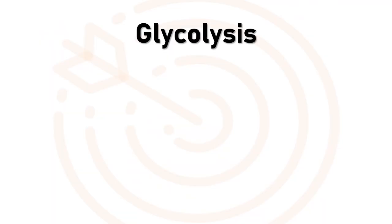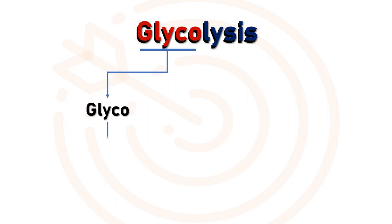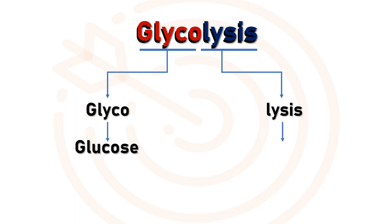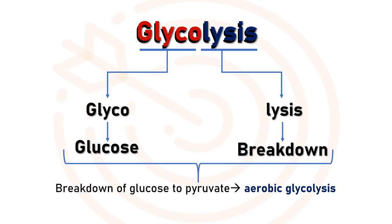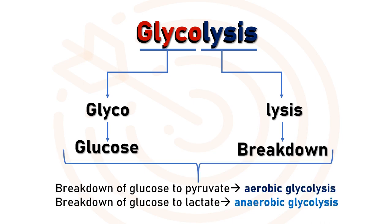Glycolysis is a word made up of two different words. The first is 'glyco,' which means sugar — that is glucose — and the other is 'lysis,' which means breakdown. So glycolysis is the oxidative breakdown of glucose to pyruvate.